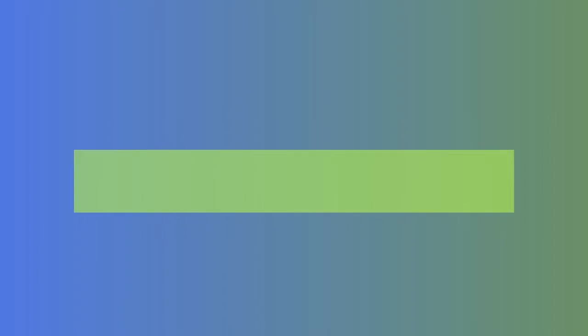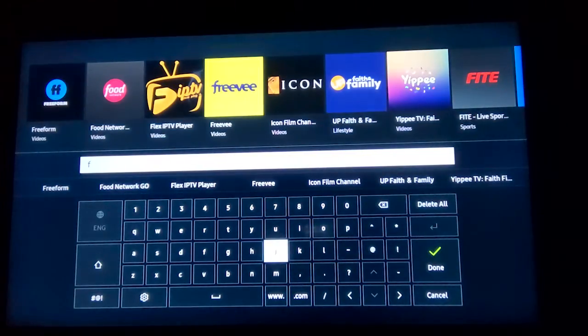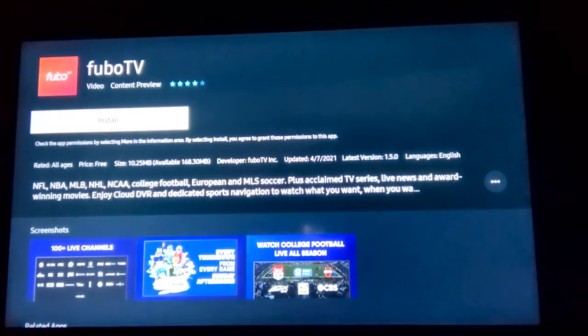Now let's cover how to uninstall and reinstall apps on your Samsung Smart TV. As we said, we've had to do this when we want to delete our former user data on an app like Fubo TV. From the settings section of the app screen, find the app you want to delete and follow the steps we just covered to delete it. Then go to the search icon in the app screen and begin typing the name of the app you want to reinstall. When it comes up, click Install. To open the app and begin using it, click Open.